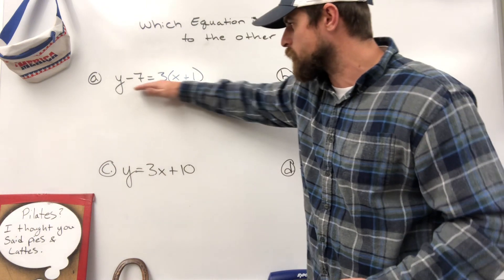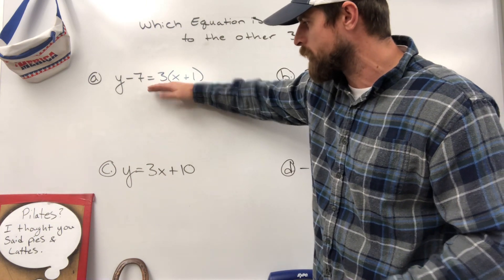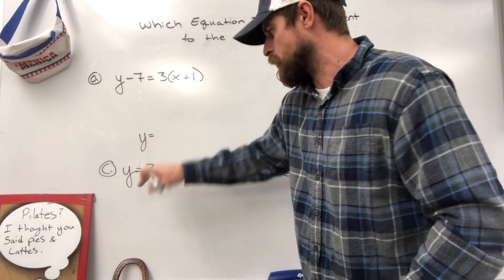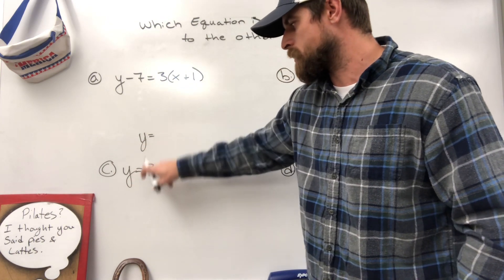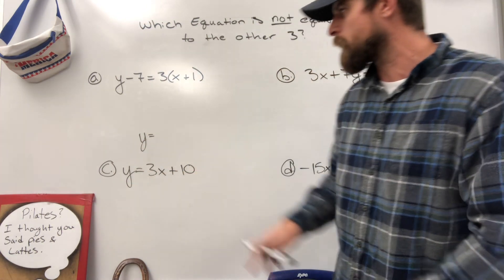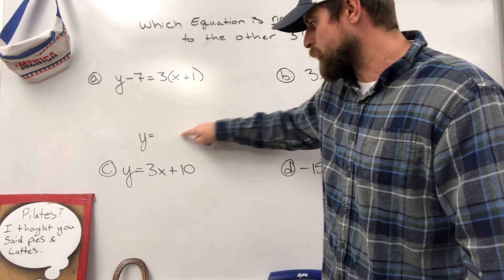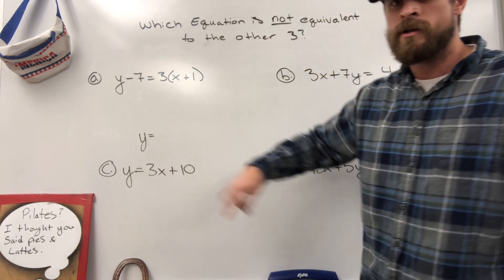For example, if I take this equation here, which is in point slope form, and I convert it to y equals, isolate the y so that I have it in slope intercept form, if this comes out to 3x plus 10, we'll know that these match. So let's start there.